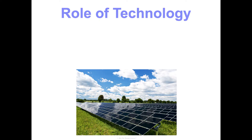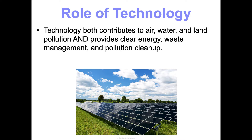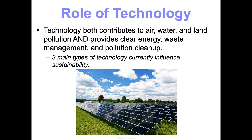Technology has played a significant role in both increasing our need for resources and being part of the solution. From Unit 1, Biology Basics, we defined technology as the application of scientific discoveries to meet human needs and goals through the development of products and processes. By doing that, we've contributed to air, water, and land pollution, but we've also provided cleaner energy, waste management, and pollution cleanup. We'll talk through three main categories of technology that have influenced sustainability in both positive and negative ways.